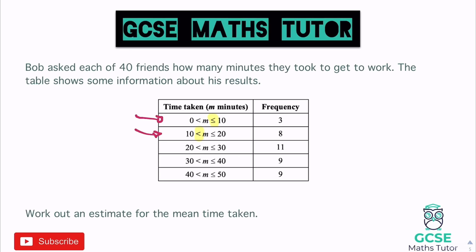The range is nice and easy. Normally you'd do the biggest value minus the smallest, but since we have groups rather than exact numbers, we estimate using midpoints. We do the midpoint of the highest class (45) minus the midpoint of the lowest class (5), giving an estimated range of 40. Really simple to calculate.